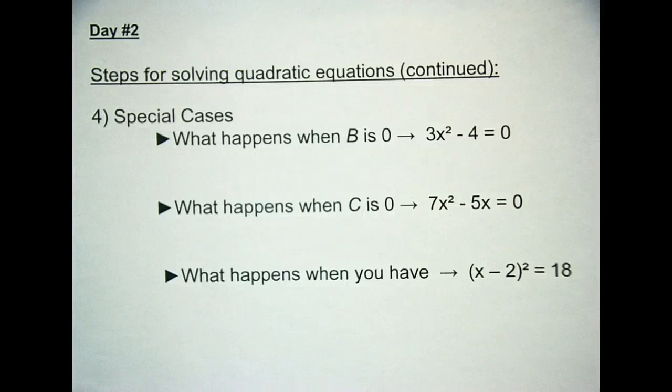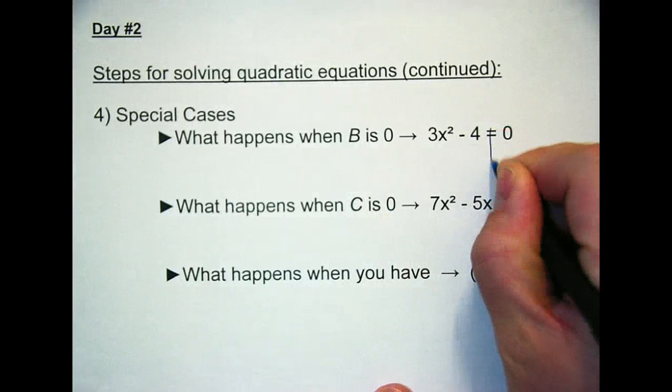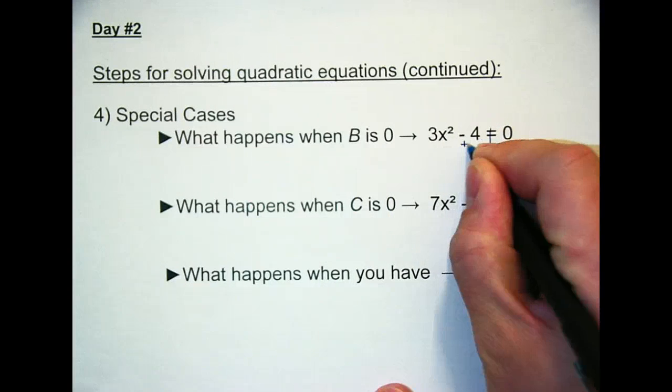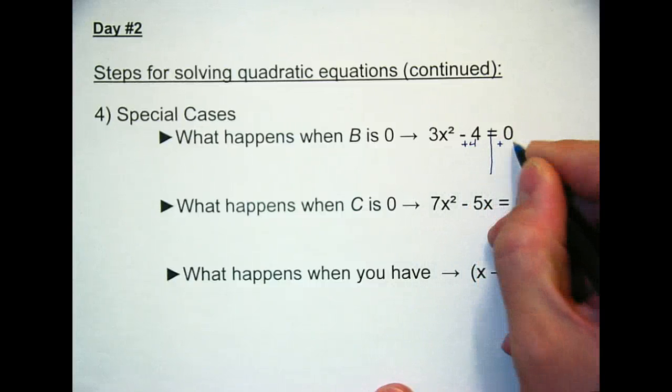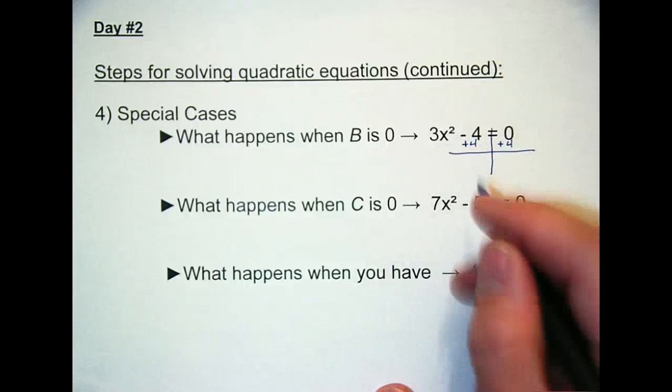So if you recall, what happens when b is 0? Well, if b is 0, you can just solve for x squared. There's only one x in there, so you just isolate x, you get x by itself.